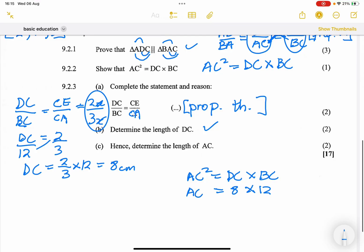So AC squared. All right, so 8 multiplied by 12. Okay, let's work that out quickly. So that's 8 times 12. That's 96. So AC is the square root of 96.